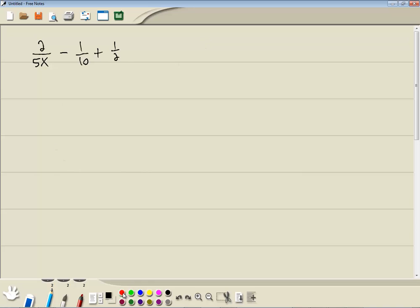Now our first step is to get a common denominator. Let's do that over here. So we've got the LCM of 5x, 10, and 2.